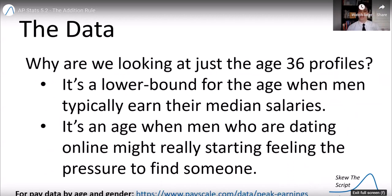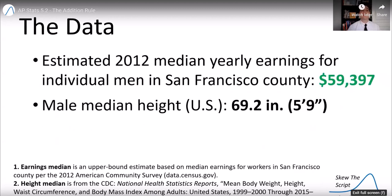Why am I looking at age 36 profiles? Well, it's a lower bound for the age when men typically earn their median salaries. And it's also an age when men who are dating online might really start to feel the pressure to find someone and settle down. So we estimated the 2012 median yearly earnings for individual men in San Francisco County to be $59,397 at the time. That's kind of an upper bound estimate. And the male median height in the United States is estimated to be around 69.2 inches.